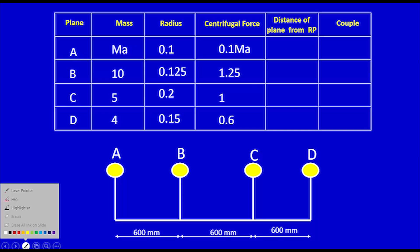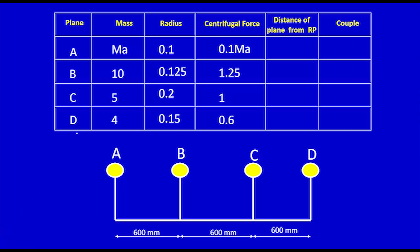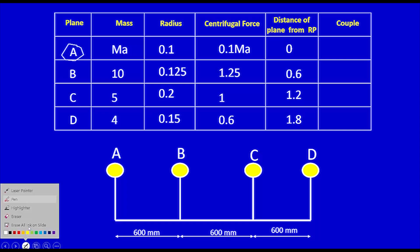The next column is for the distance of each plane from the reference plane. I need to choose a reference plane such that all the values in the couple polygon are known. Since none of the angles are provided in the problem, to ensure all the couple values are known, I will choose plane A as the reference plane. Therefore, the distance of plane A from reference plane A is 0, plane B is 0.6 m, plane C is 1.2 m, and plane D is 1.8 m.